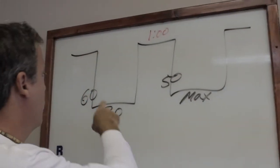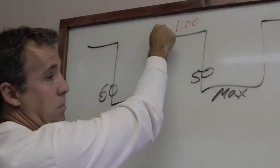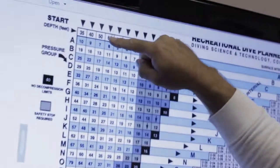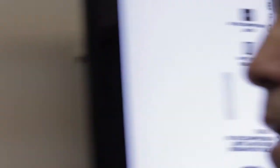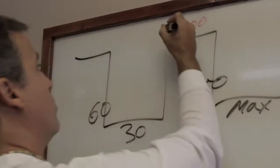We can do this easily. First we know that 60 feet for 30 minutes is going to give us a pressure group. Let's find it. 60 feet for 30 minutes gives us a pressure group of L. We'll write that down - pressure group L.